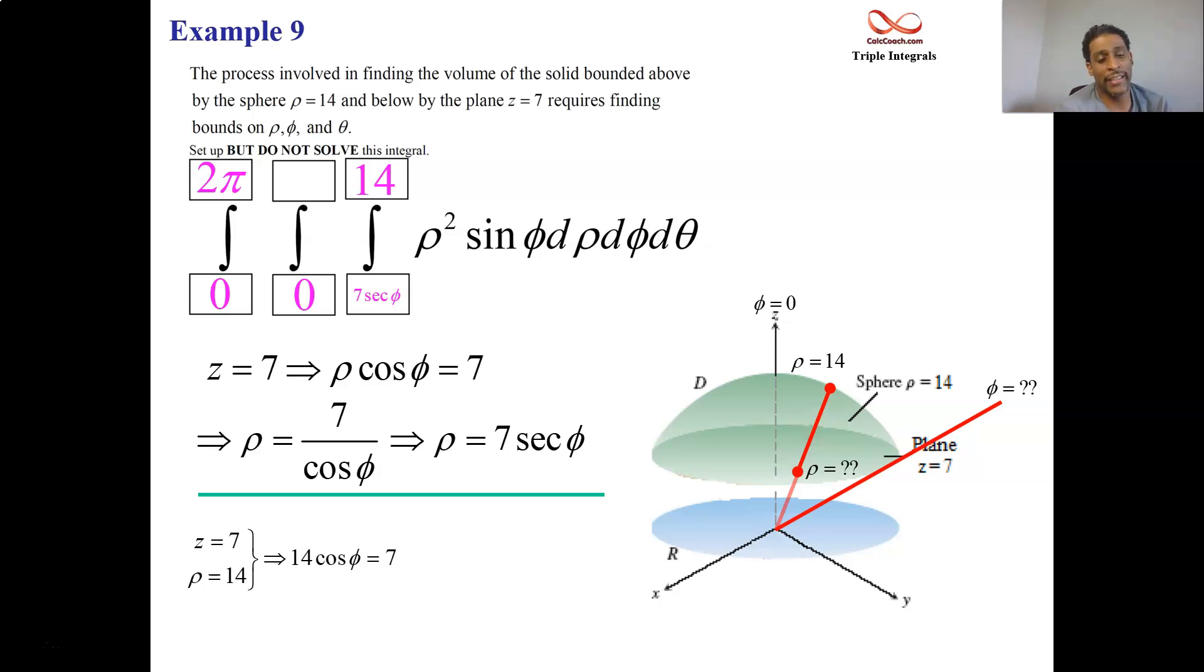So 14 cosine phi is equal to 7. So cosine phi is 7 over 14. It's a half. What angle gives you a half when plugged into cosine? It's going to be pi over 3, 60 degrees.